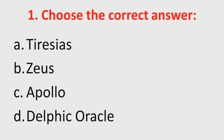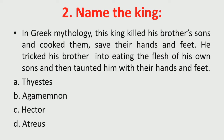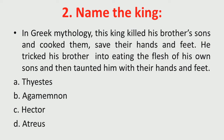Please do not ignore or neglect your Greek mythology. Next slide — name the king here. In Greek mythology, this king killed his brother's sons and cooked them, saving their hands and feet. He tricked his brother into eating the flesh of his own sons and then taunted him with their hands and feet. Who was the king? Options: Tiresias, Agamemnon, Hector, Atreus. Next, identify the queen: though married to Theseus, she fell in love with Hippolytus, Theseus's son by another woman. But Hippolytus rejected her; in revenge she wrote Theseus a letter claiming Hippolytus had raped her. Who was the queen? Options: Electra, Clytemnestra, Phaedra, Ariadne.